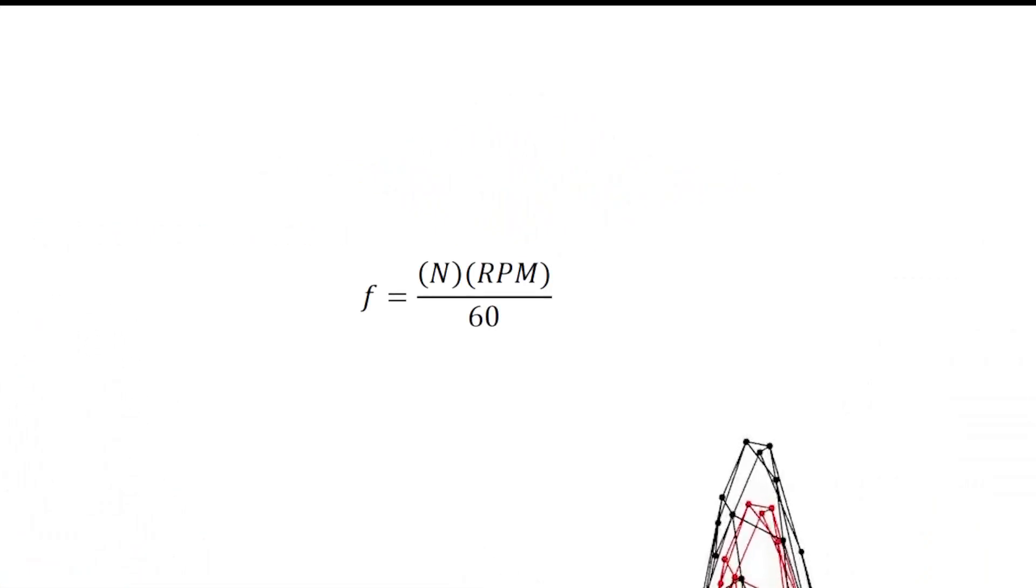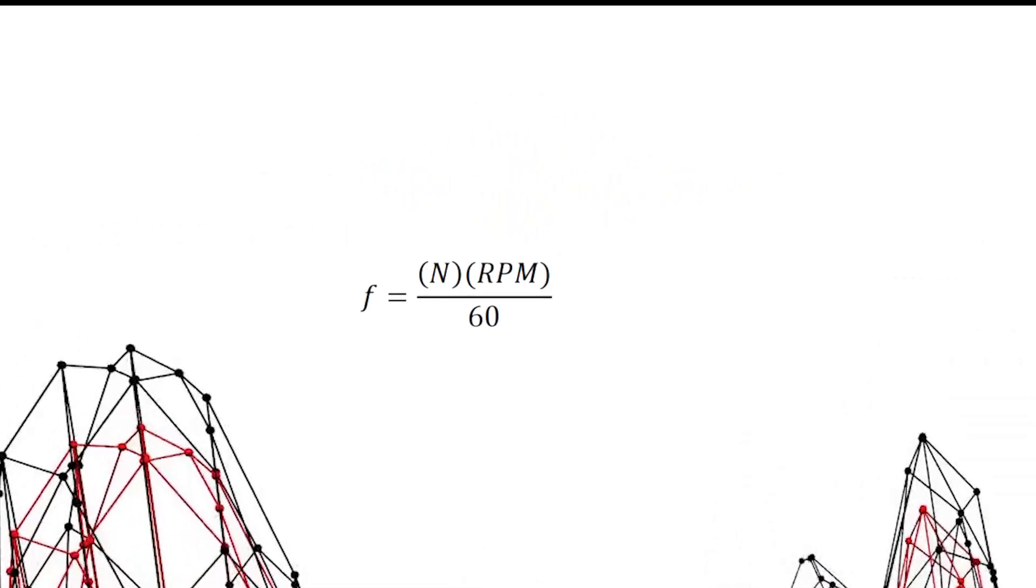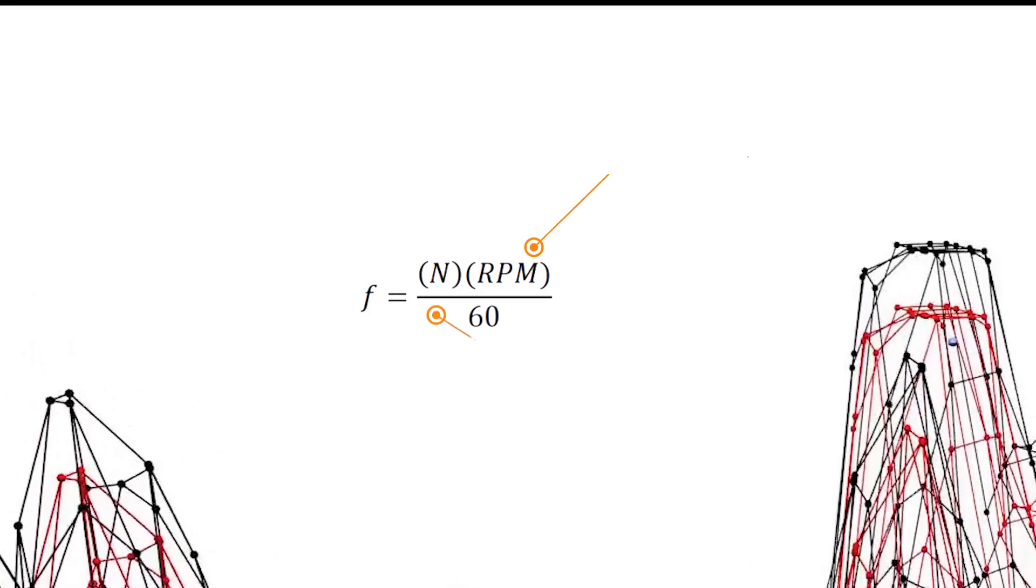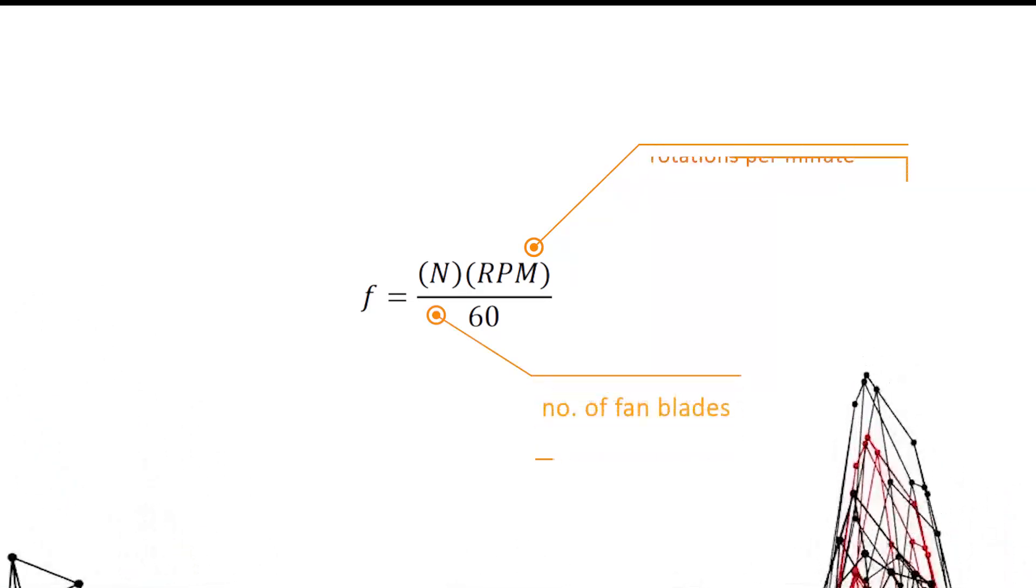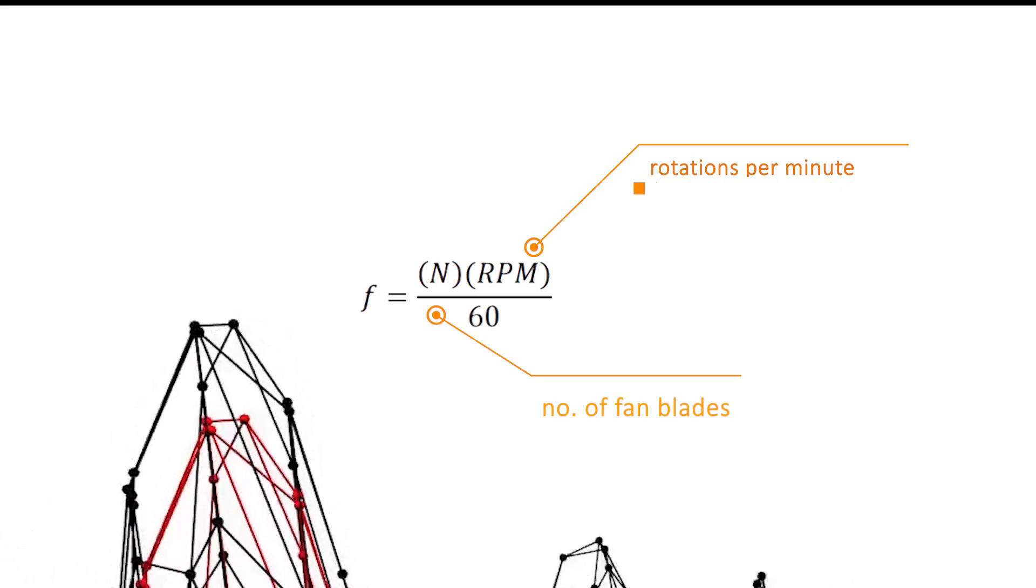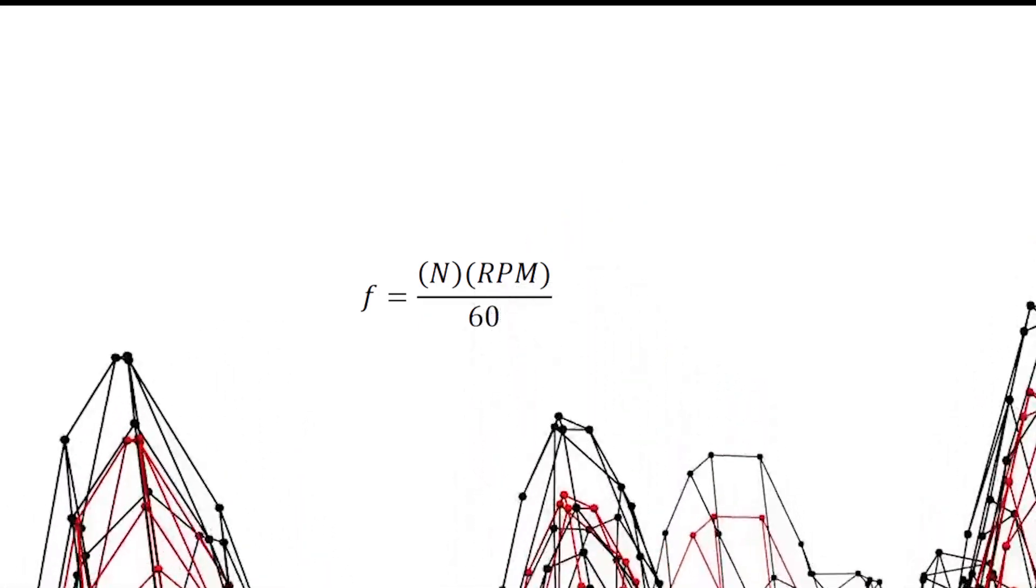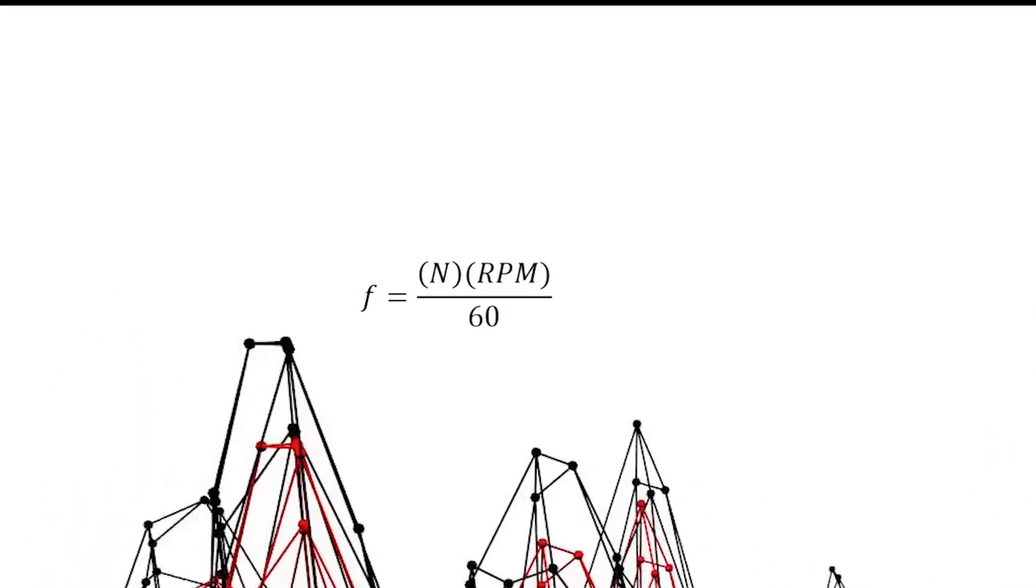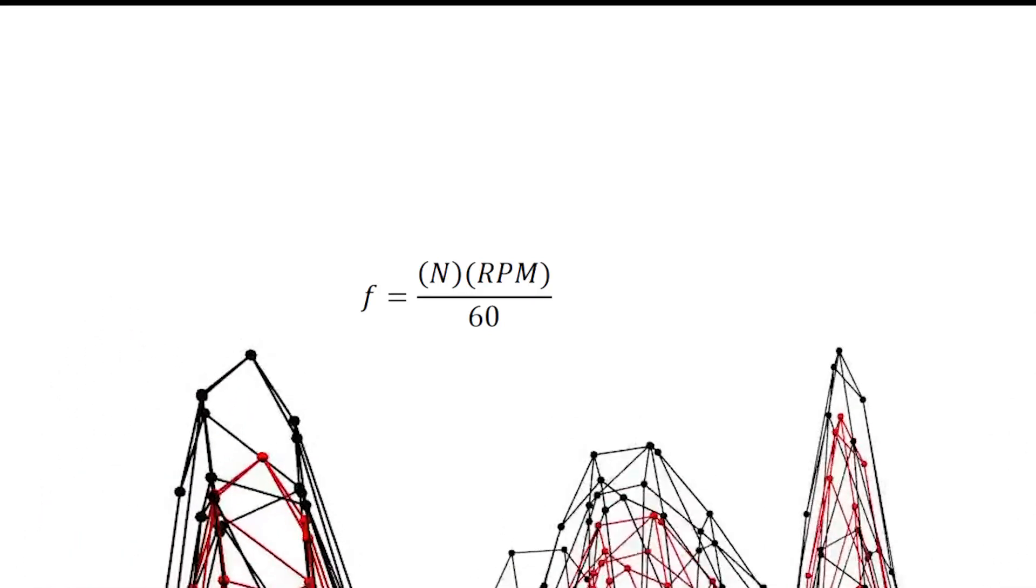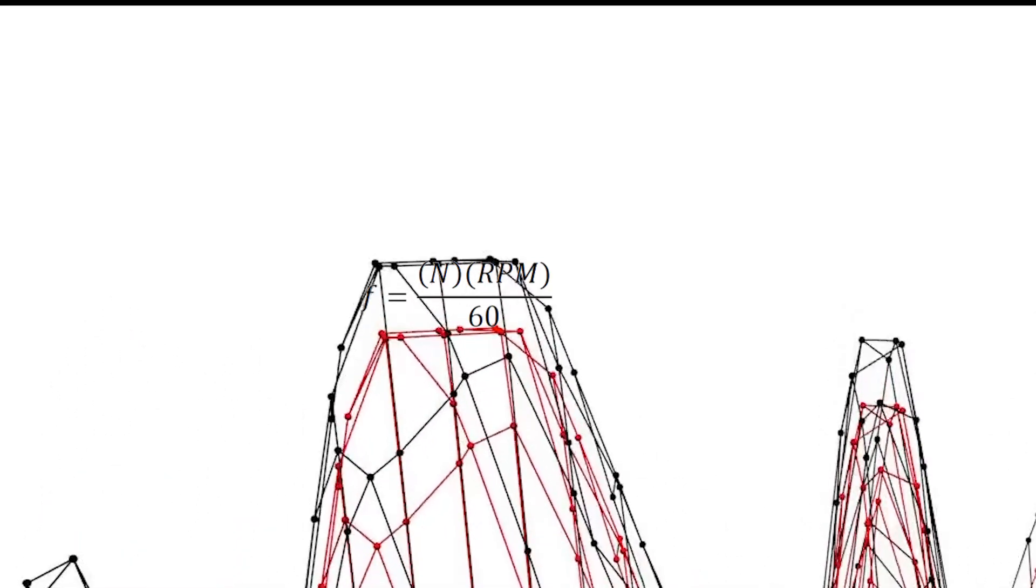The other equation for frequency is applied to a rotating fan. We have RPM, which stands for rotations per minute. We have N, which refers to the number of blades. Multiplying the number of blades by the number of rotations per minute and dividing that value by 60, we are going to get the frequency.